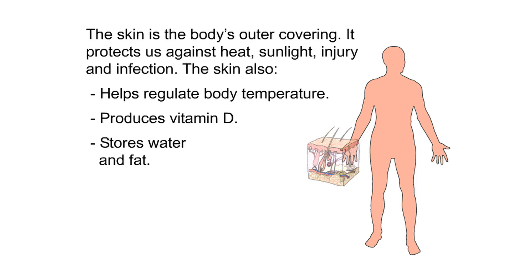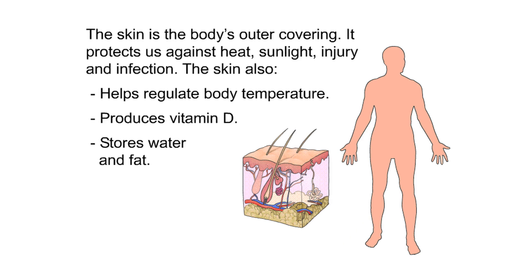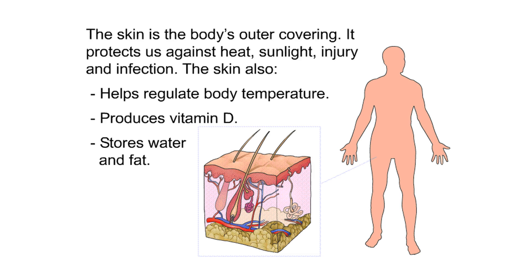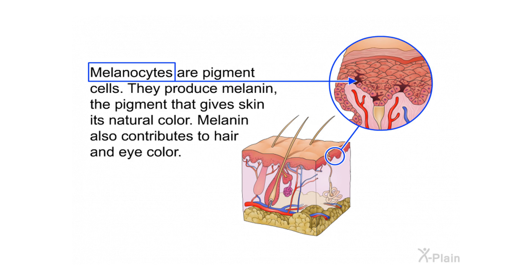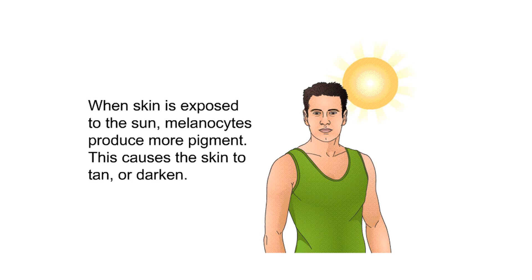The skin is the body's outer covering. It protects us against heat, sunlight, injury, and infection. The skin also helps regulate body temperature, produces vitamin D, and stores water and fat. The skin has two main layers: the outer epidermis and the inner dermis. The deeper part of the epidermis contains melanocytes — pigment cells that produce melanin, the pigment that gives skin its natural color. When skin is exposed to the sun, melanocytes produce more pigment, causing the skin to tan or darken.